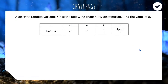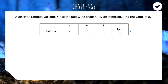For the challenge question, a discrete random variable x has a probability distribution with four outcomes and probabilities expressed in terms of p. Since the probabilities must sum to one, we add all four: p squared plus p squared plus p/4 plus 4p plus 1/8 equals one, giving an equation we can solve for p.